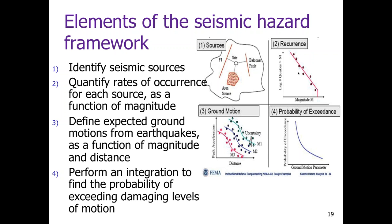The seismic hazard framework involves four elements: first, identifying seismic sources — faults or areal sources, whether natural or induced seismicity. Second, characterizing the Gutenberg-Richter relationship for each source, giving earthquake frequency by magnitude. Third, applying a ground motion prediction equation relating ground motion amplitude to magnitude and distance. Fourth, integrating these to produce hazard curves giving the probability of exceeding different ground motion levels.